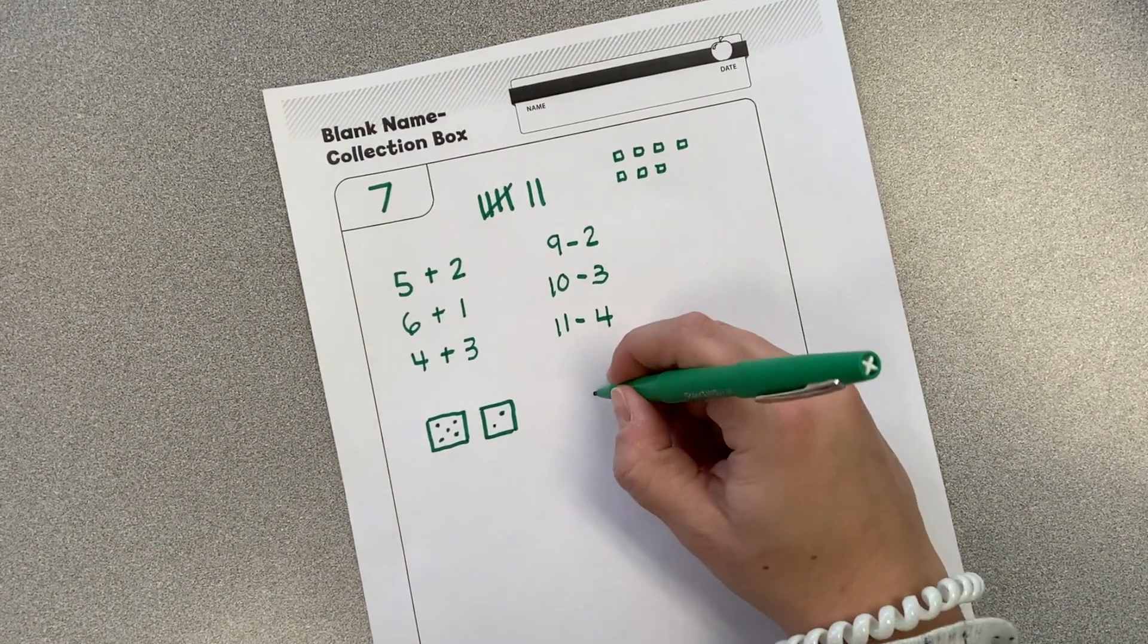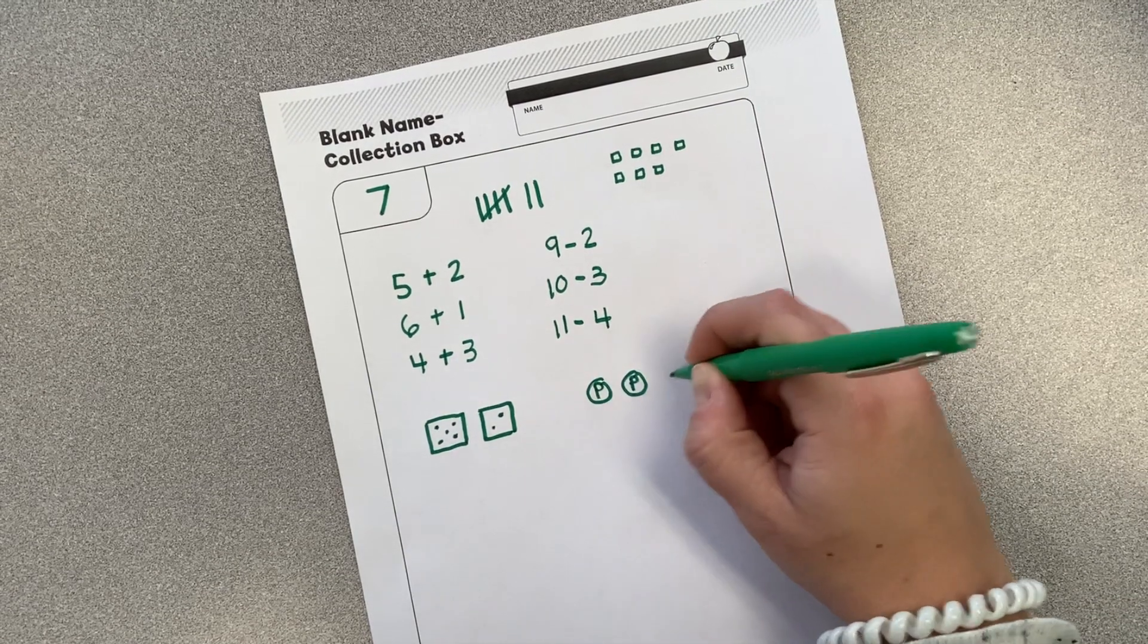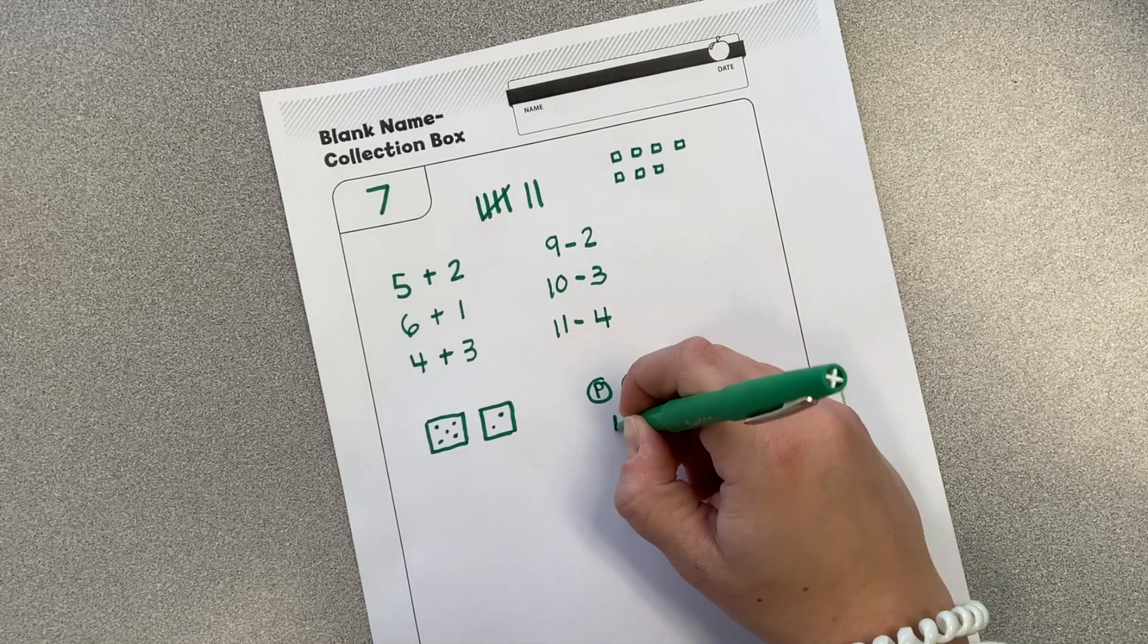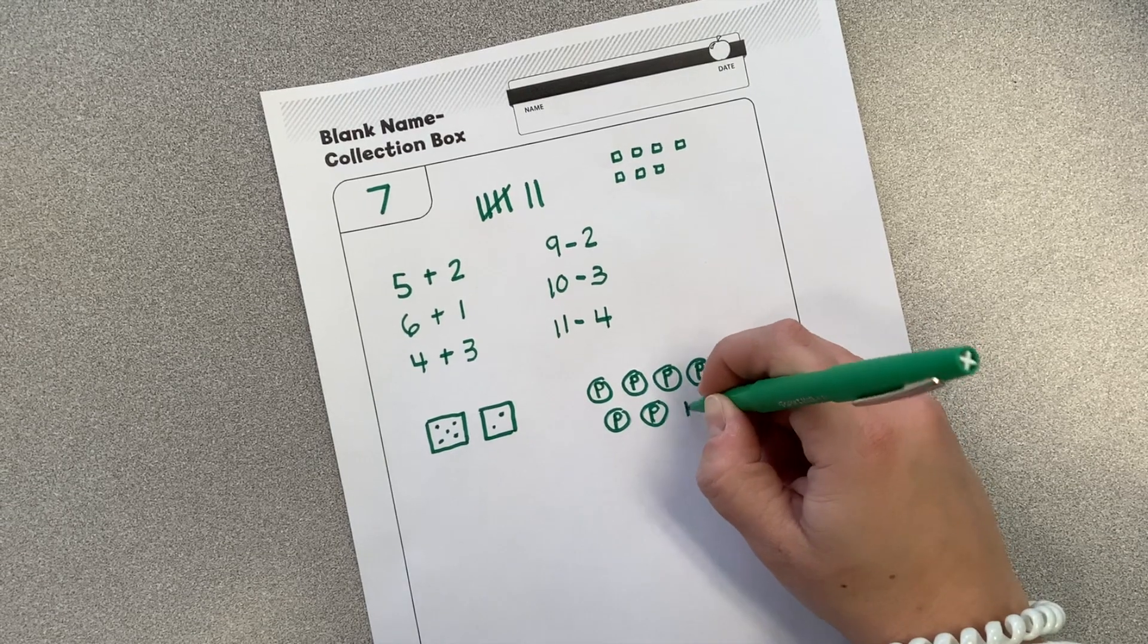How else could I make seven? Oh, I know with pennies. I would need seven pennies. I'm just writing a P and circling it to show that they're pennies. Five, six, seven.